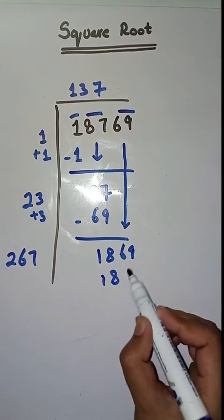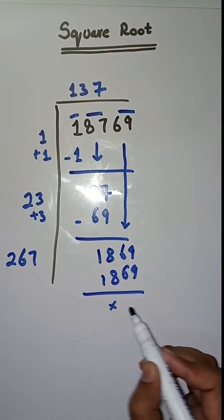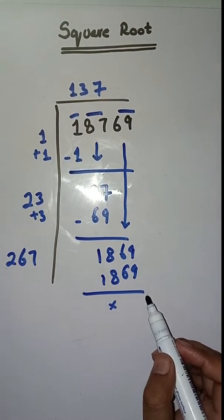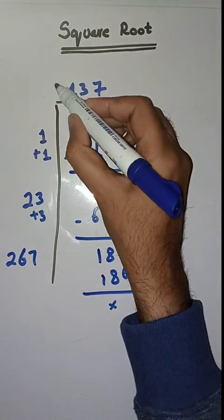So it is completely solved. So square root of 18,769 is 137.